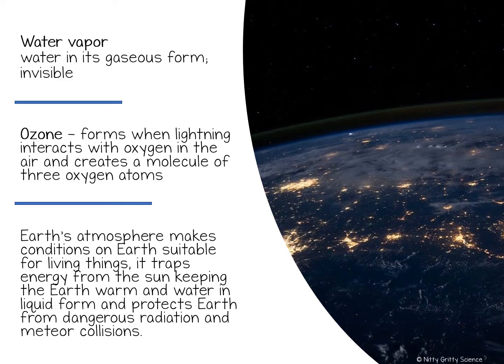The composition of air discussed so far was for dry air, but the air is not dry at all because it contains water vapor, or water in the form of gas. We cannot see water vapor, but it plays a very important role in Earth's weather. Clouds form when water vapor condenses out of the air to form tiny droplets of liquid water or crystals of ice, and if these droplets or crystals become large enough, they fall as precipitation in the form of rain or snow.